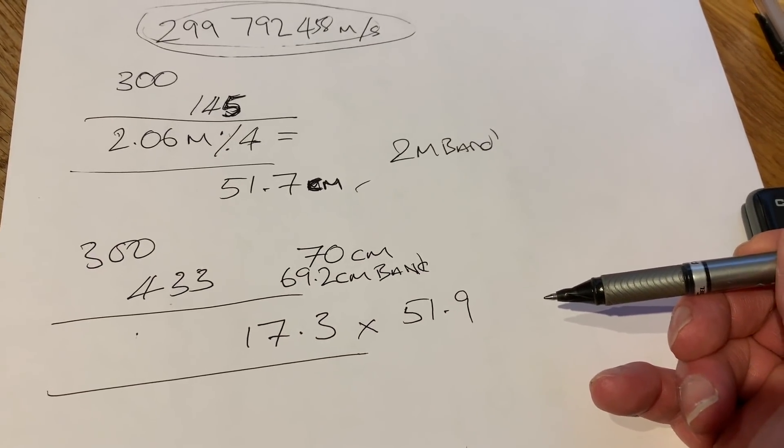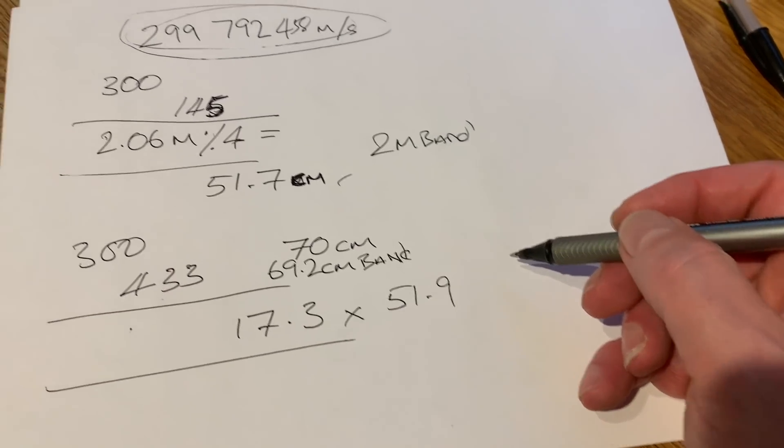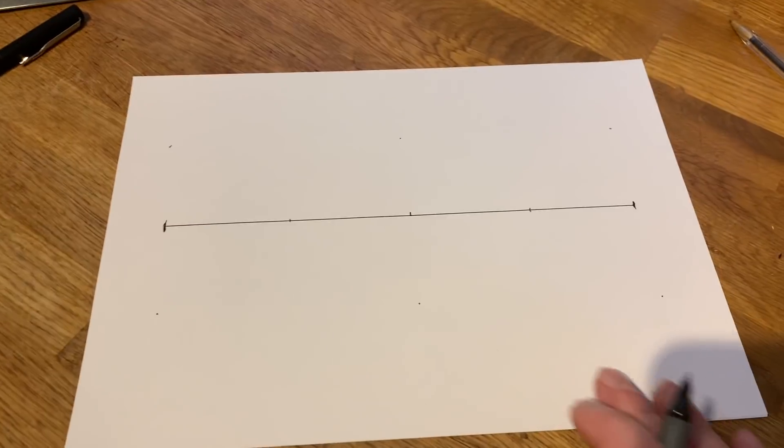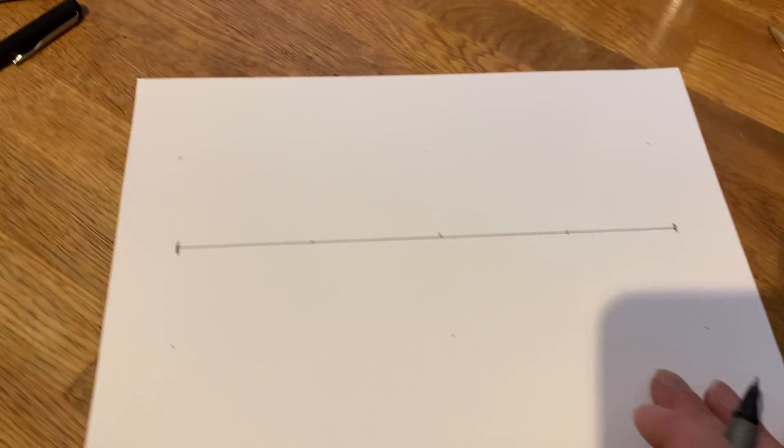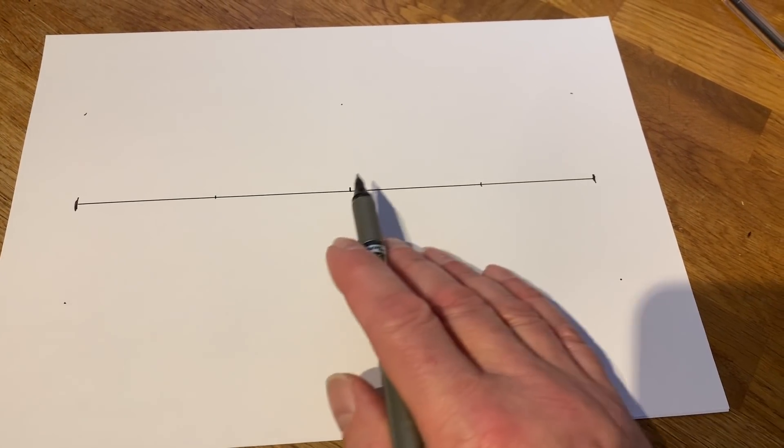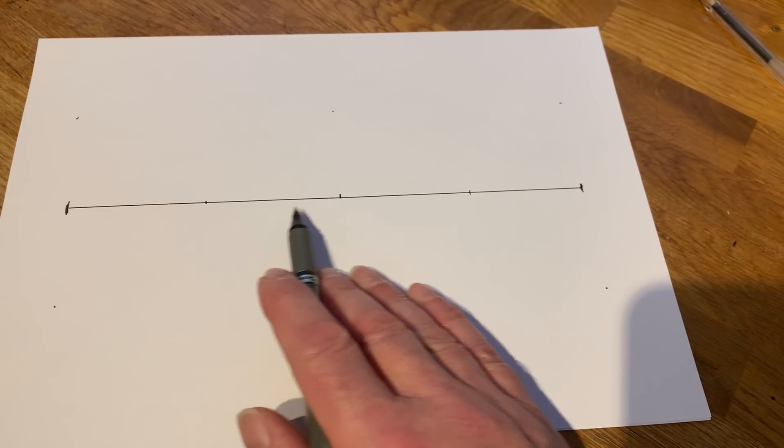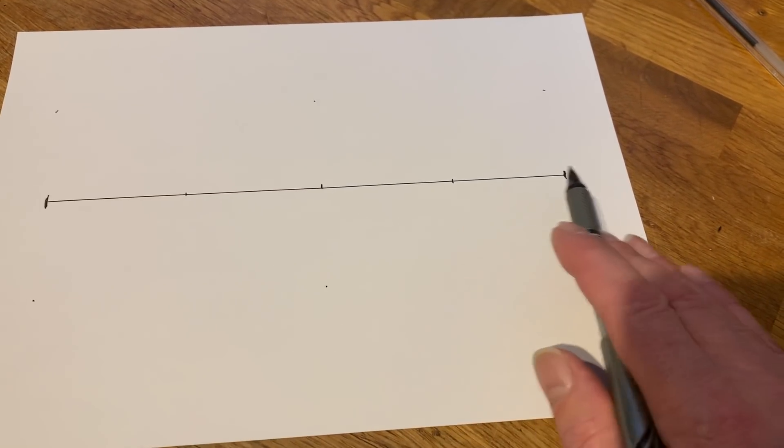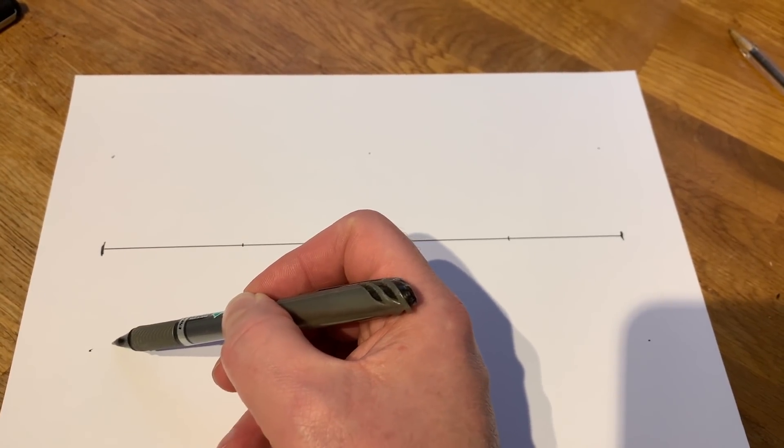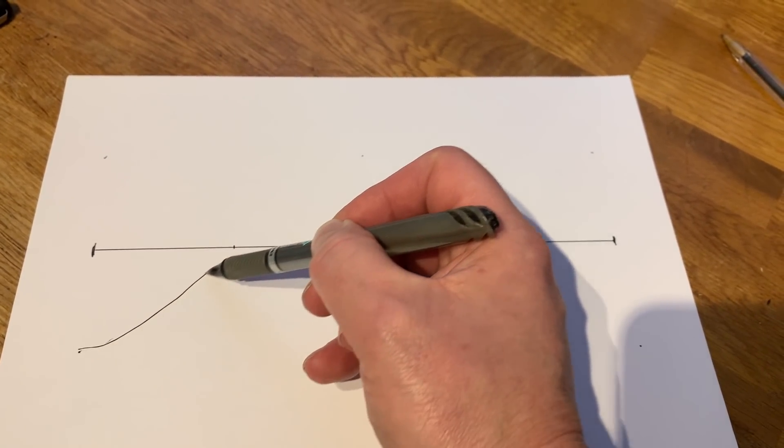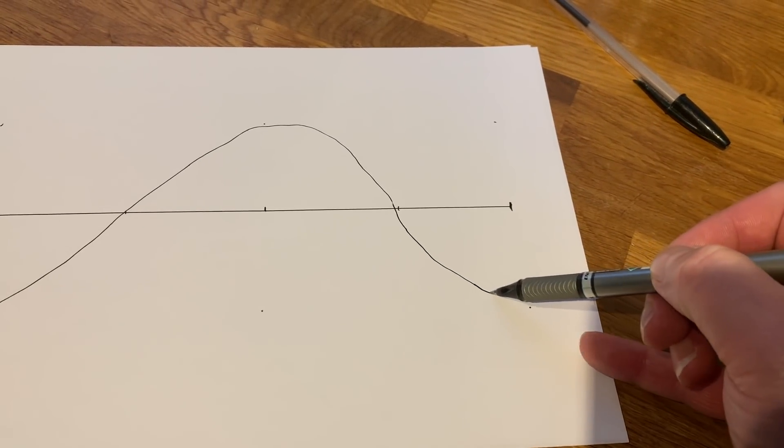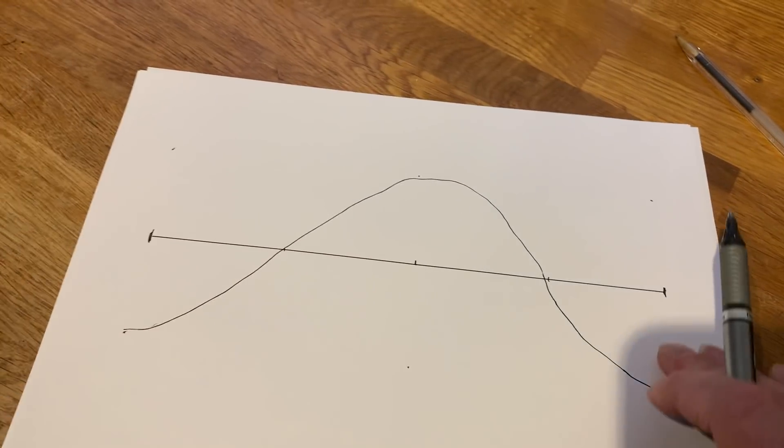The purists are going to be really upset with me, but for ease of understanding, I'm going to draw a quick graph. This is our antenna, and I've divided the antenna into four to represent quarter wavelengths. I'm going to draw you a quick graph to explain really how impedance works.